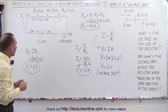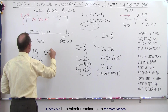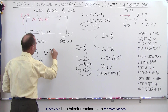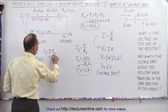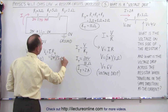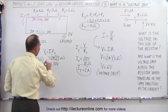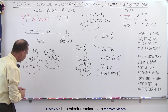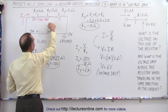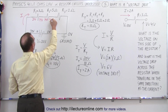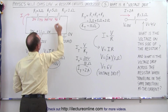The voltage drop across the second resistor, V2, equals the current times R2 — that's 2 amps times 5 ohms — giving a 10 volt drop across R2. Since the voltage on the left side is 14 volts, with a 10 volt drop the voltage on the right side will be 4 volts, which is also the voltage on the left side of the third resistor.